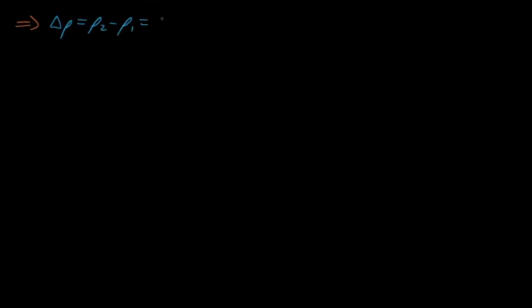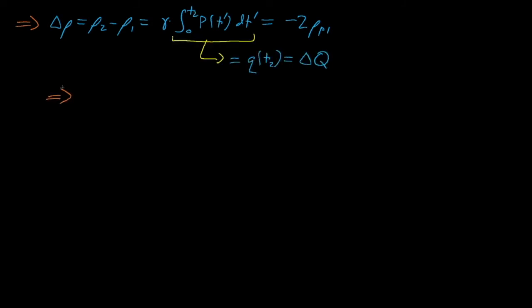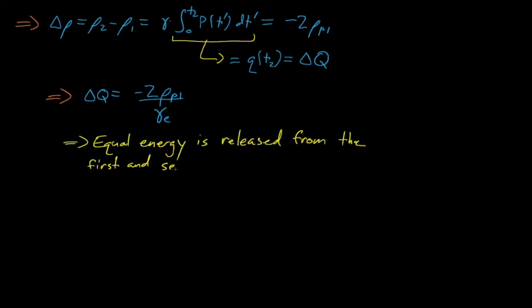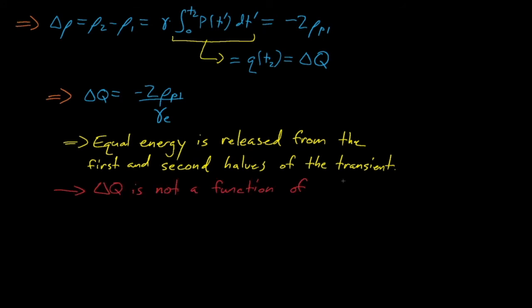This means that the overall change in reactivity during the transient is equal to negative 2 times rho_P1. Recalling that the power integral equals the energy released by the transient, we see that the total energy release is simply equal to negative 2 times rho_P1 divided by gamma_E. So the total energy released by the transient is again not a function of initial power or neutron generation time, but only a function of rho_P1 and gamma_E.